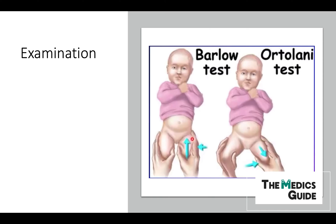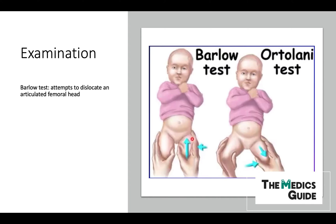These are two examinations that are really important in this condition. In Barlow's test, we actually attempt to dislocate the femur from the acetabulum. We adduct and then push in a posterior direction. If positive — if there is dysplasia — this will dislocate the hip.